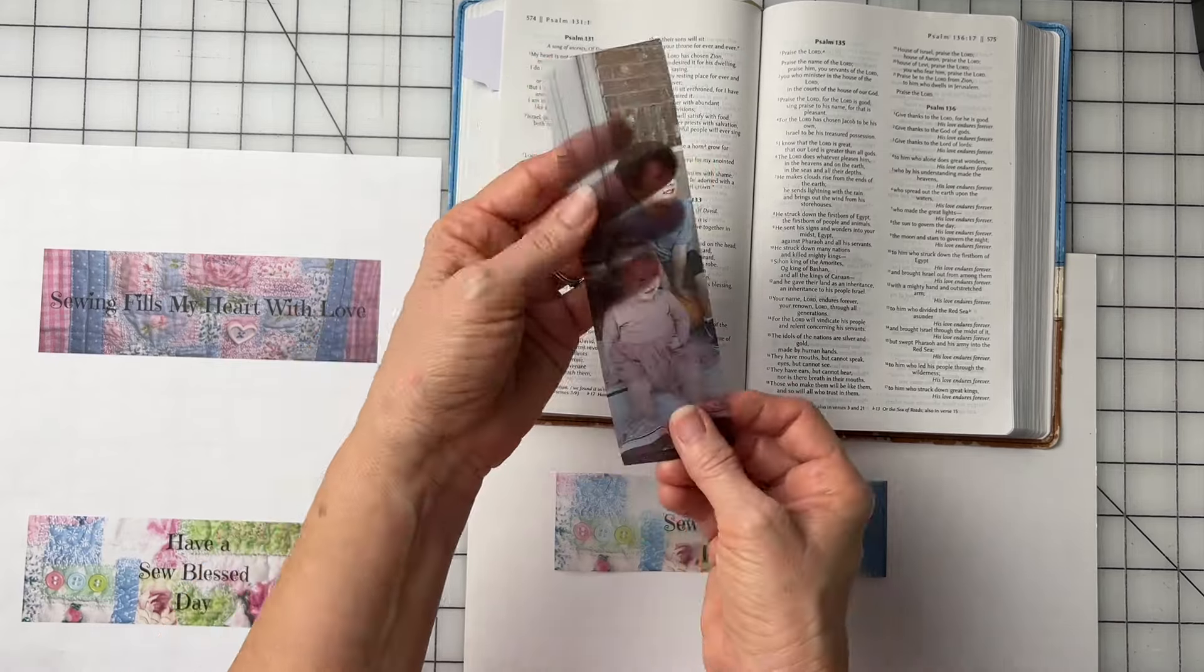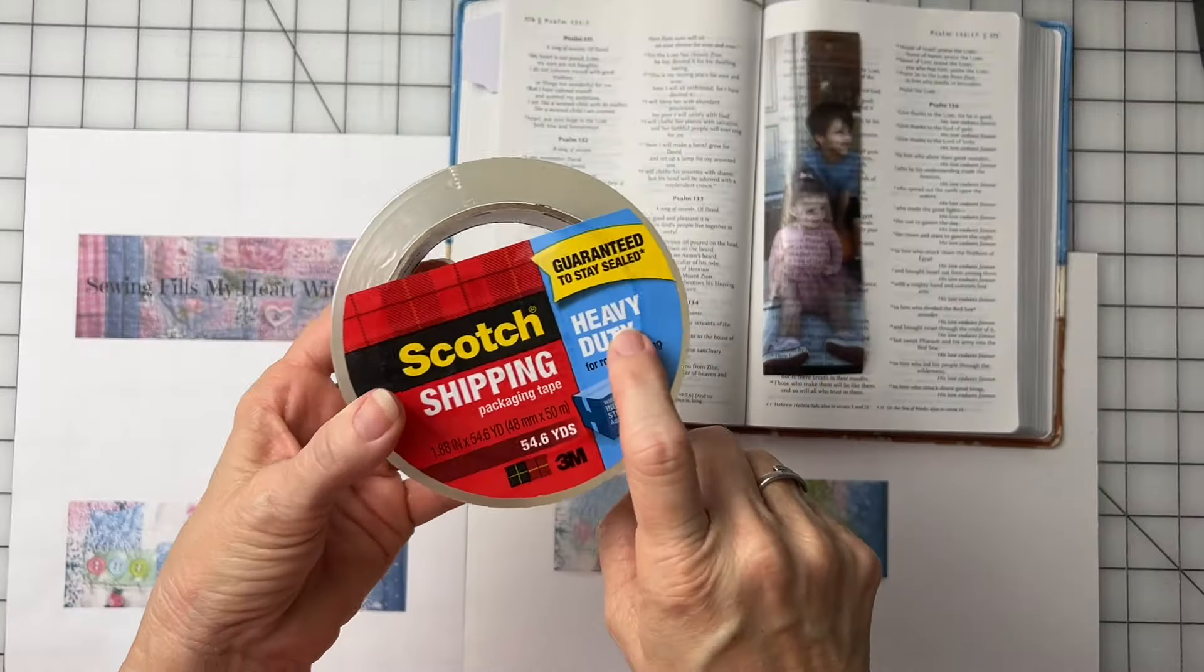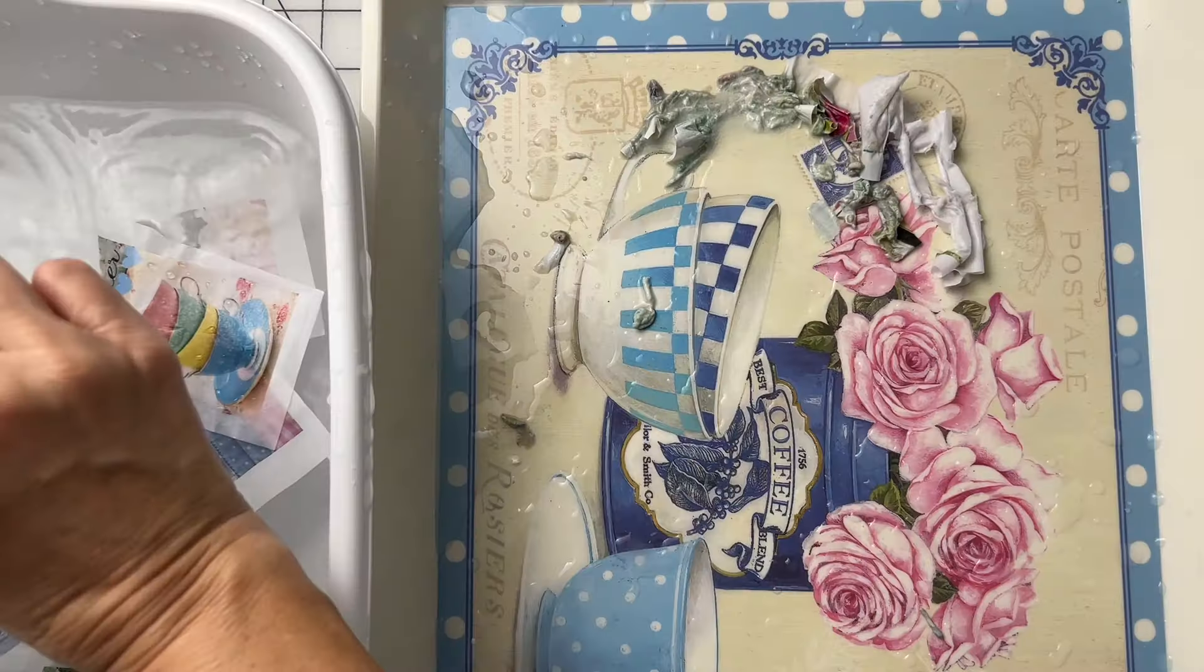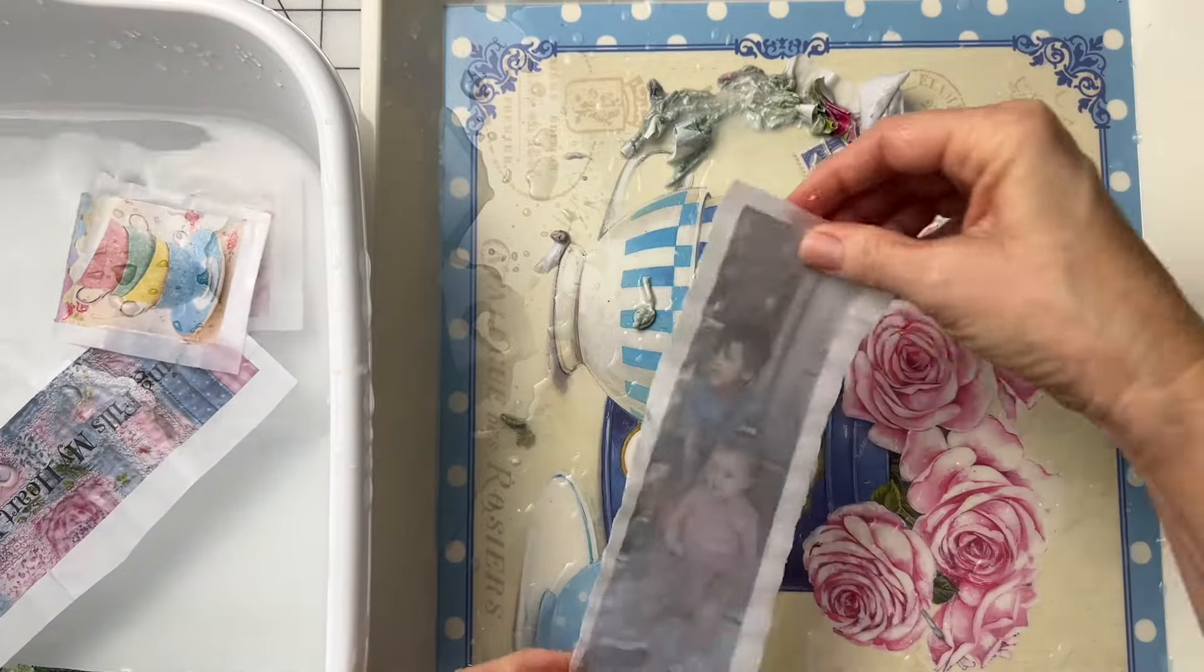Turn your favorite photo into a beautiful transparent bookmark. Take heavy duty packing tape, soak in water, and then rub off all the paper.